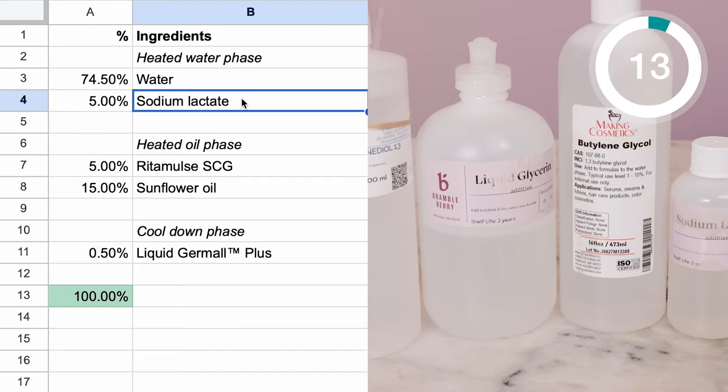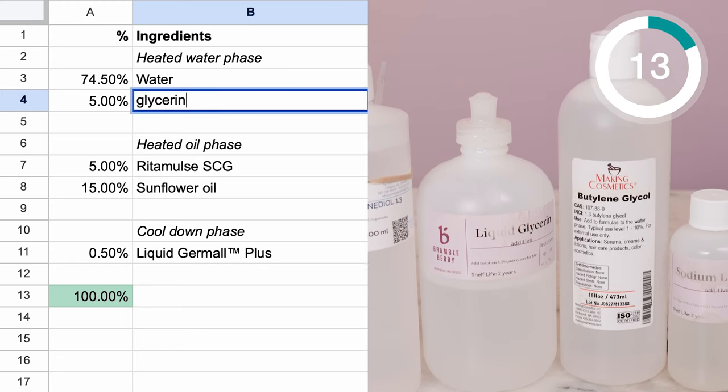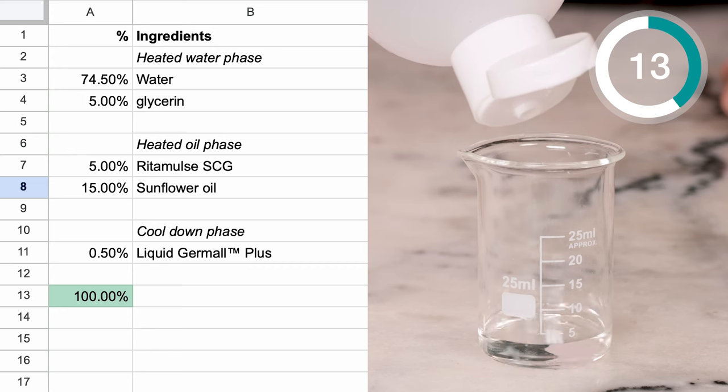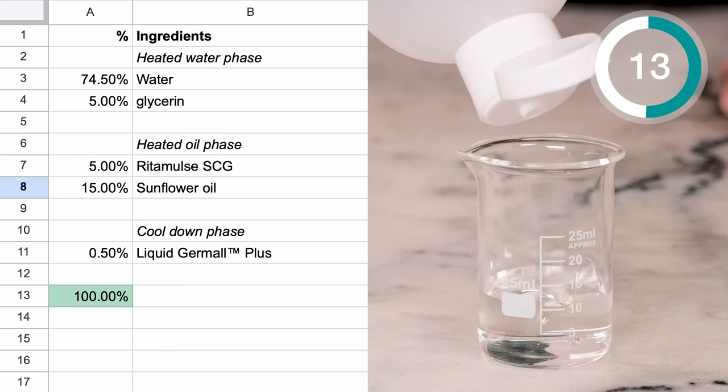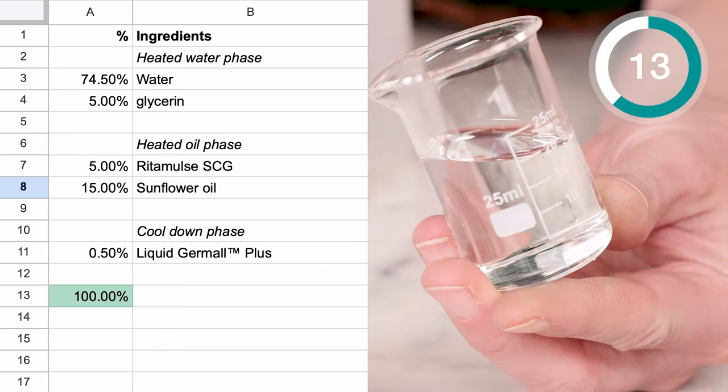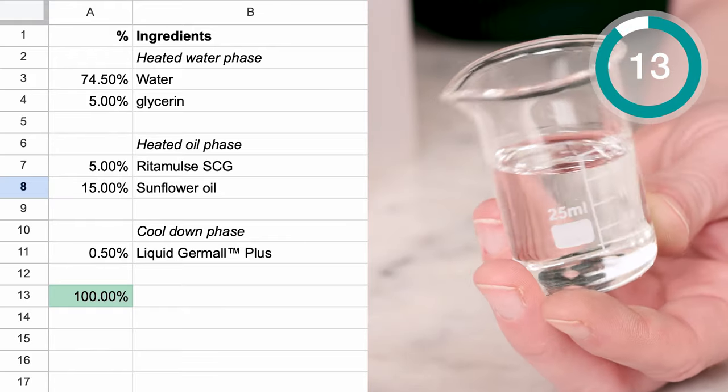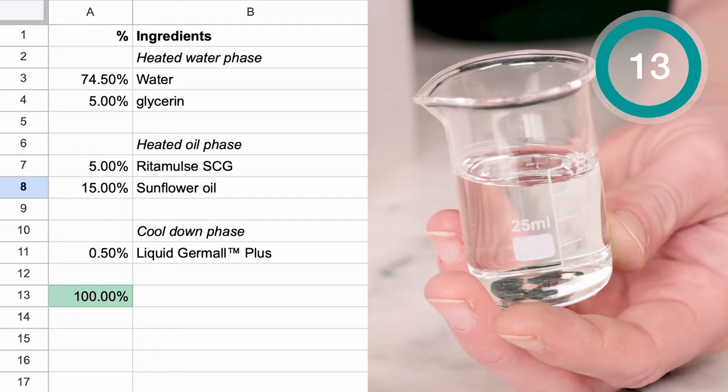Okay, now we're more than halfway done. This next one is one of my favourites. Try a different humectant. This formulation calls for sodium lactate, so you could try propanediol or glycerin instead. Just be sure to keep in mind that if you are switching to a humectant that is electrolyte rich, like sodium lactate is, that can impact the viscosity of your formulation.